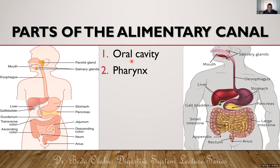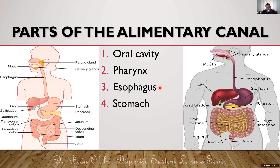The pharynx is a common passage for both food and air. From the pharynx, food can now go to the esophagus, which is the food pipe. After the esophagus, food goes to the stomach, which is the primary site of storage of food. From the stomach, food goes to the small intestine, which has three segments.